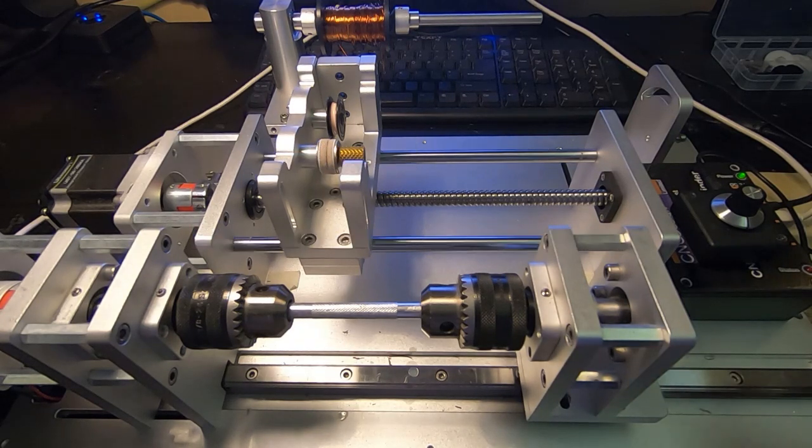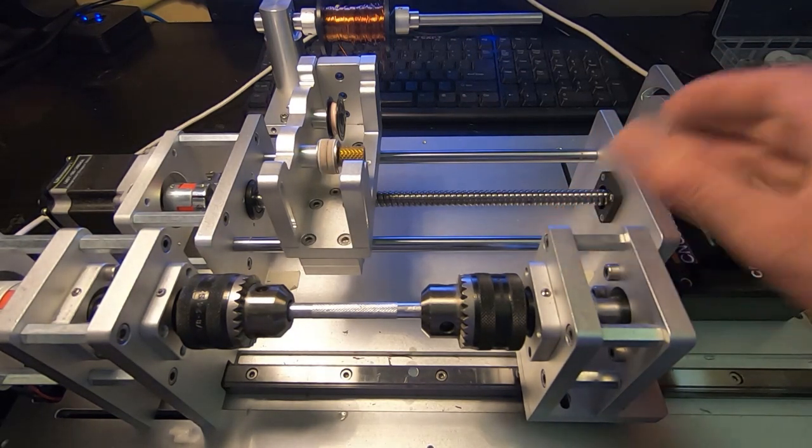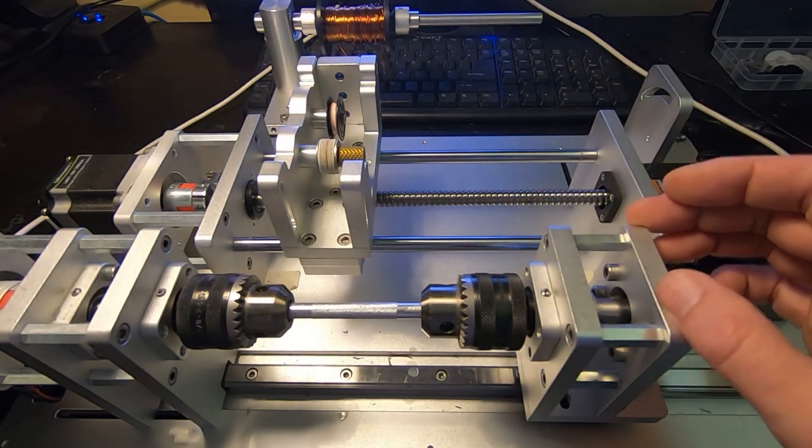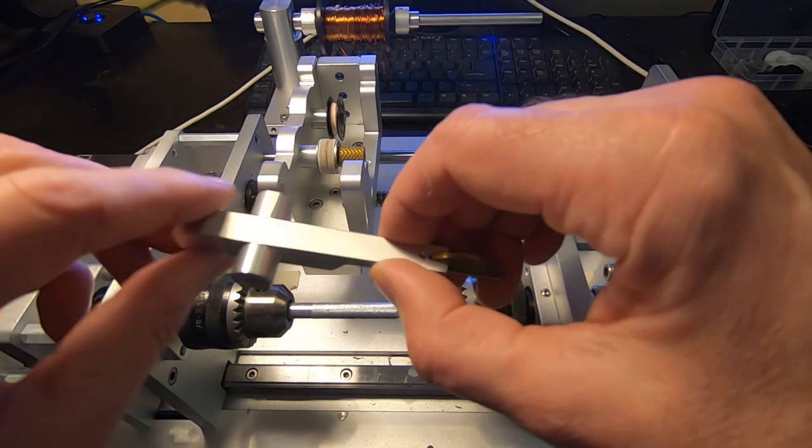Quite some time ago I posted a video showing this machine. It is a CNC coil winder and I showed it winding a very simple linear coil, and then I showed an adapter that I'd made which was for winding wave wound coils.